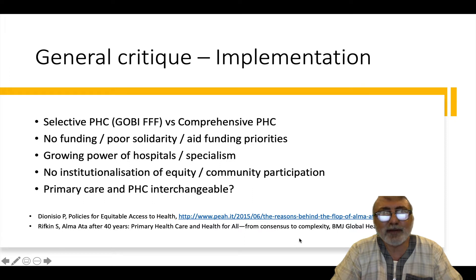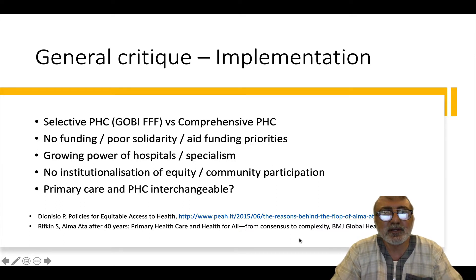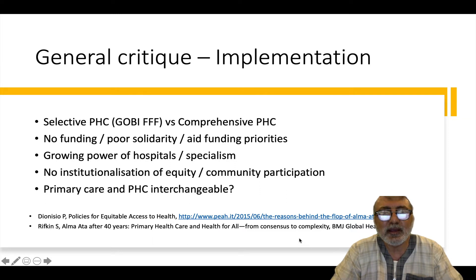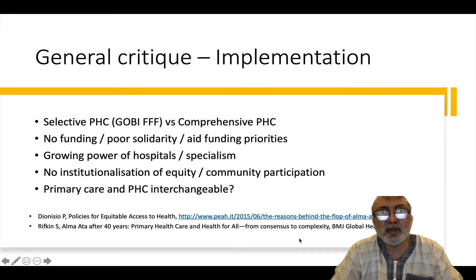There were also problems with the fact that there was no funding, that there was poor global social solidarity, and that aid funding came with its own priorities that undermined country priorities. There was also this growing power of hospitals and specialism across the world which undermined the move towards primary health care. There was no specific way laid out in which equity and community participation could be prioritized, and the words primary care and primary health care became interchangeable.